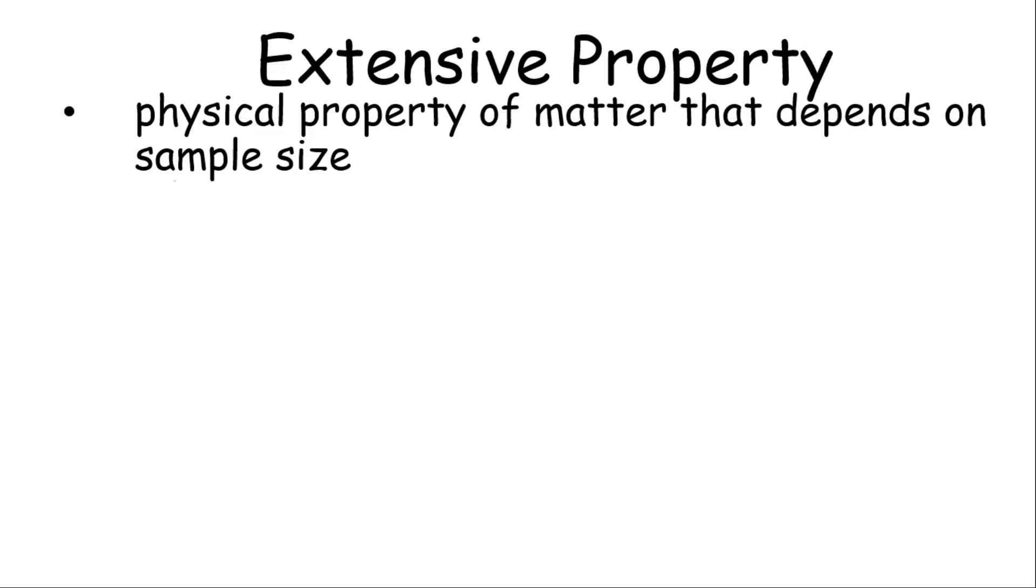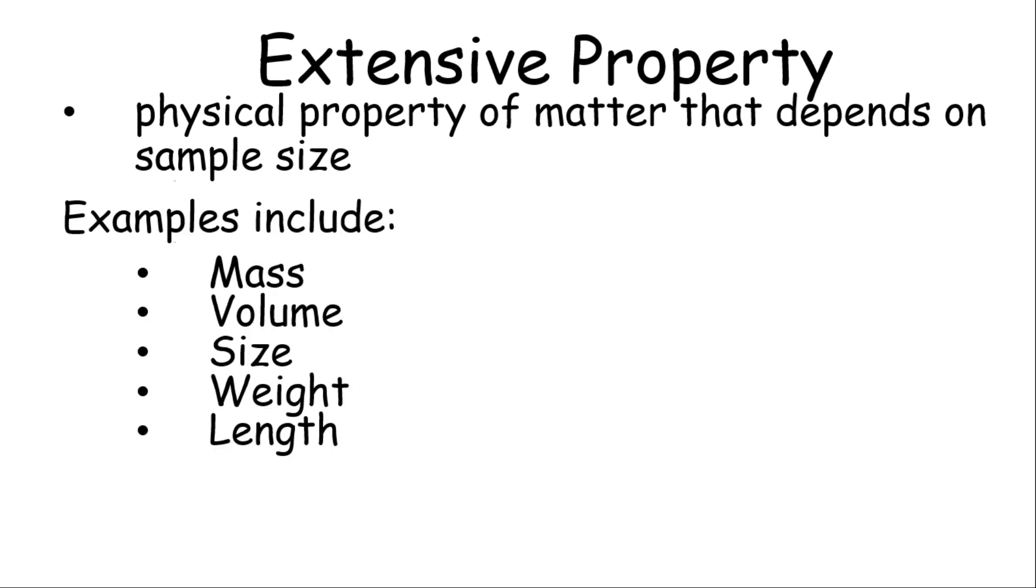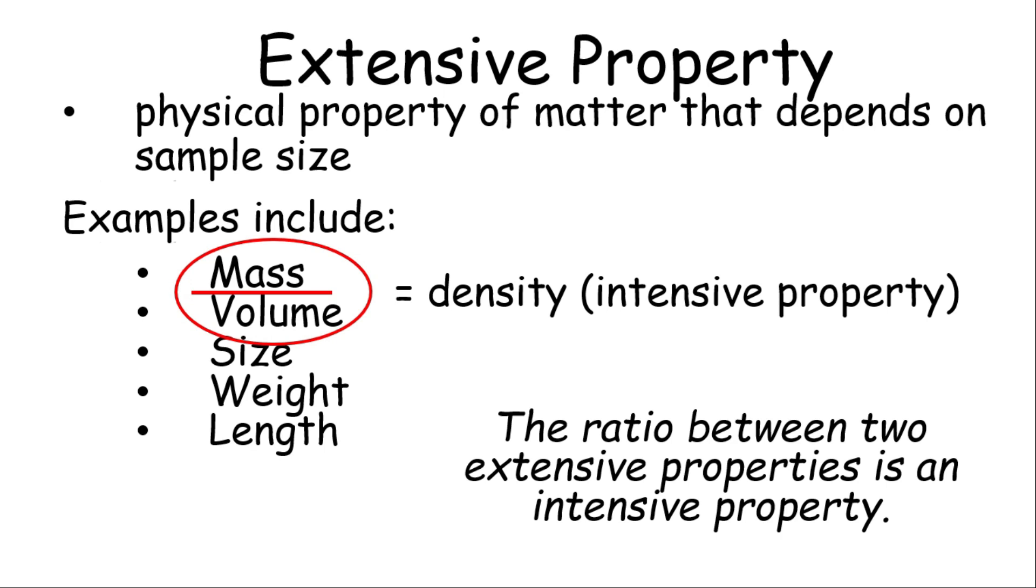Now, extensive property is the physical property of matter that depends on the sample size. Examples include mass, volume, size, weight, and length. If you notice, if you get the ratio of mass and volume, you will have the density, which is an intensive property. Remember, the ratio between two extensive properties is an intensive property.